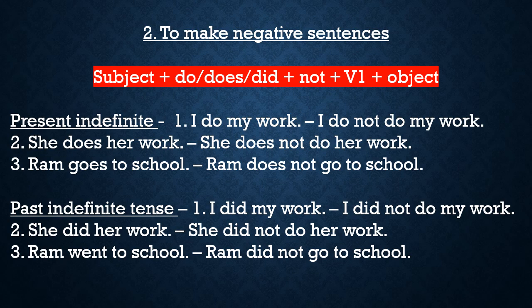Past tense negative examples: 'I did my work' — its negative is 'I did not do my work' — maine apna kaam nahi kiya. 'She did her work' — 'She did not do her work.' 'Ram went to school' — 'Ram did not go to school' — Ram school nahi gaya. Yahaan par went jo verb hai woh verb ka second form hai. Negative banane ke liye hamne did ka istamal kiya, kyunki went past tense mein hai. Jab did, do ya does ka use hota hai, toh main verb ka first form likha jaata hai — went ka first form hai go.